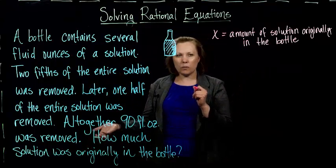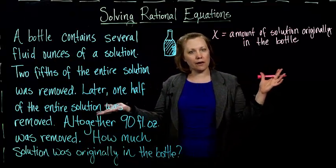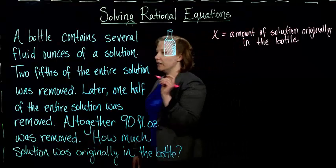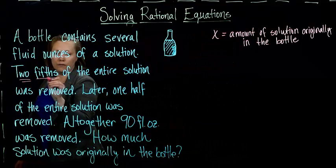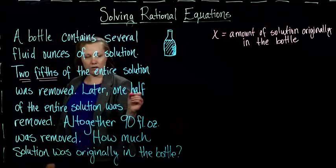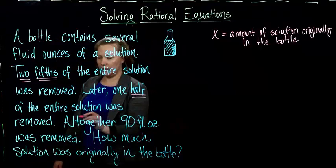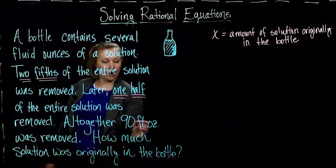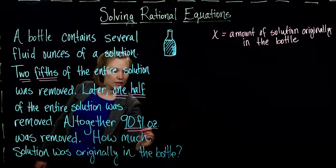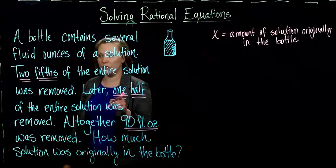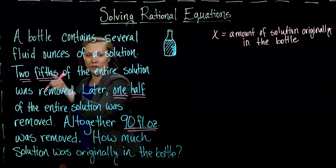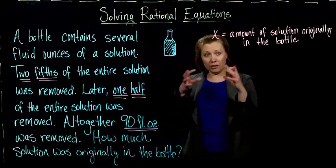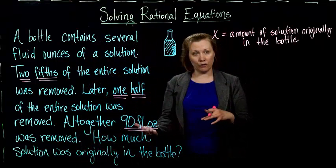I have to read the problem maybe a couple more times to figure out what information I can use. I see a couple of key things: two-fifths, and then one-half, and then I also know there was 90 fluid ounces removed. If I took the two-fifths of the solution that was removed and the one-half and put them together, I should get 90 fluid ounces.